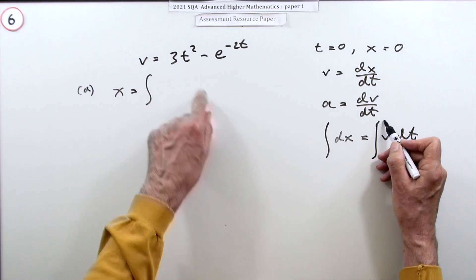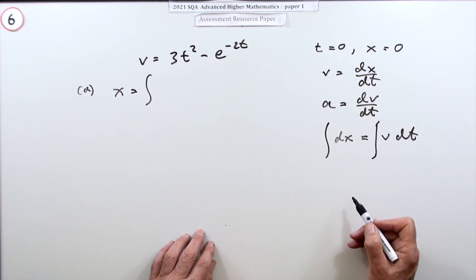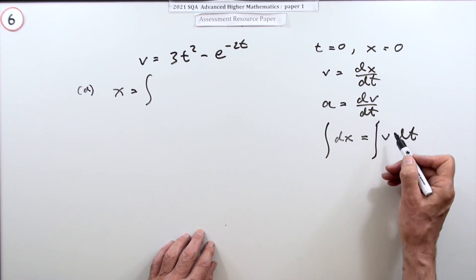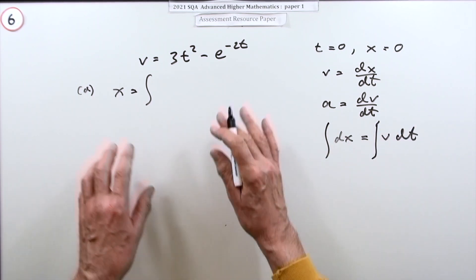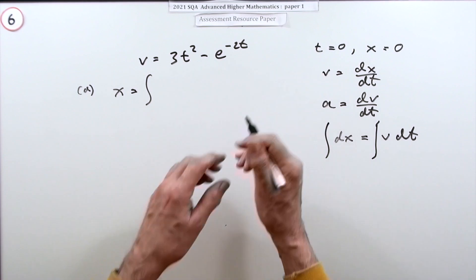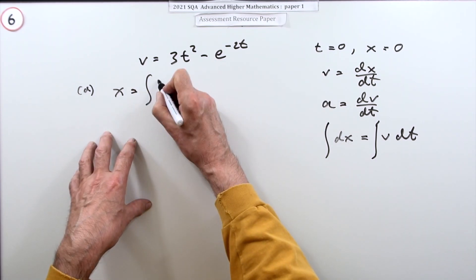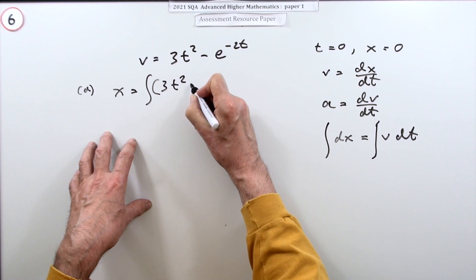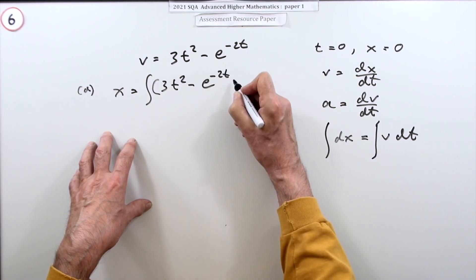There'll be a t getting used for the integrand and a t getting used for the final value, and you don't really want to use the same letter for both. So forgetting that, we'll just integrate it and get a constant and sort it out afterwards. So x is going to be the integral of 3t² - e^(-2t).